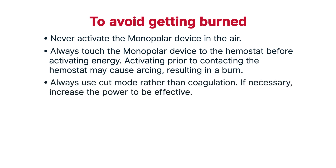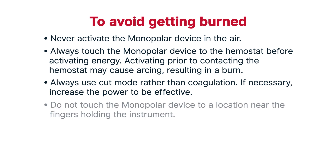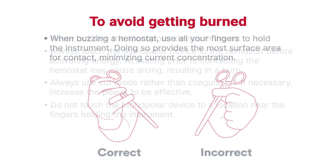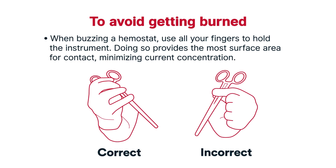To avoid getting burned: always use cut mode rather than coagulation — if necessary, increase the power to be effective. Never activate the monopolar device in the air; always touch the monopolar device to the hemostat before activating energy, as activating prior to contacting the hemostat may cause arcing, resulting in a burn. Do not touch the monopolar device to a location near the fingers holding the instrument. When buzzing a hemostat, use all your fingers to hold the instrument, as doing so provides the most surface area for contact, minimizing current concentration.